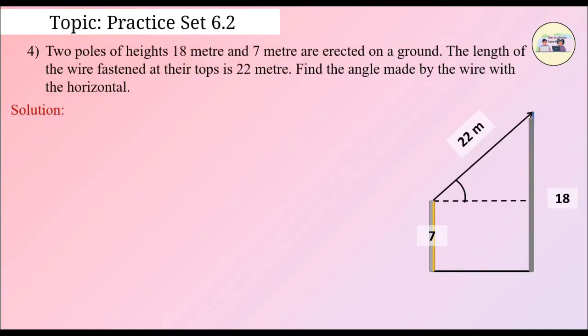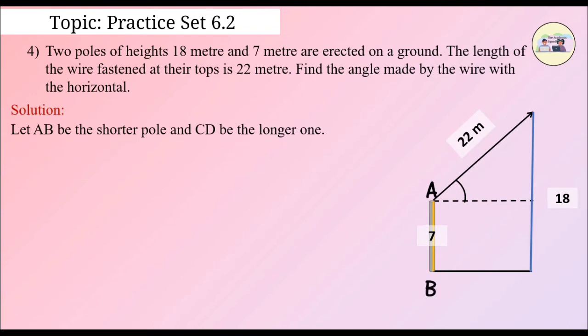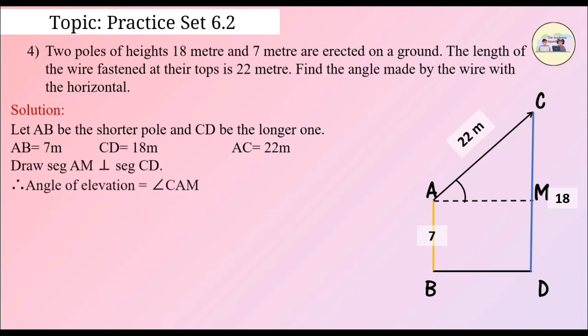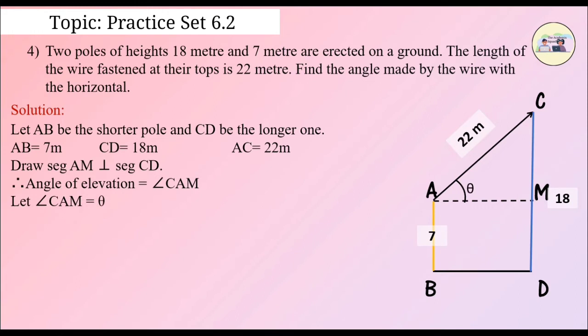Solution. Let AB be the shorter pole and CD be the longer one. Given AB is equal to 7 meters, CD is equal to 18 meters, and AC is equal to 22 meters. Draw a segment AM perpendicular to segment CD. Therefore, the angle of elevation is equal to angle CAM. We need to find angle CAM. Let angle CAM be equal to theta.